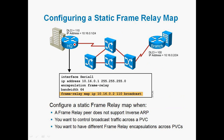Configuring static frame relay: on the headquarters router, go to interface serial 1 and give 'encapsulation frame-relay' to change the WAN protocol from HDLC to frame relay. Then assign the IP address. Static frame relay means we manually configure where packets from headquarters should go. The command is 'frame-relay map ip 10.16.0.2 110' — where 10.16.0.2 is the branch office IP address and 110 is the DLCI value. Then add the keyword 'broadcast'.